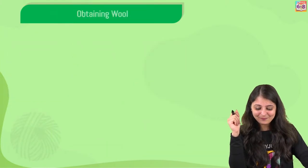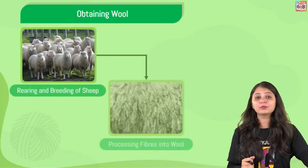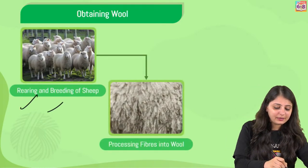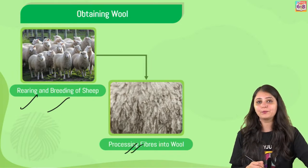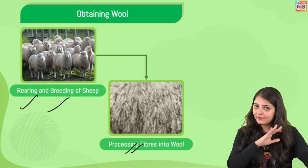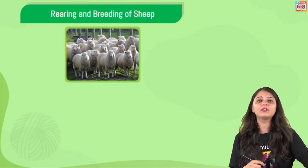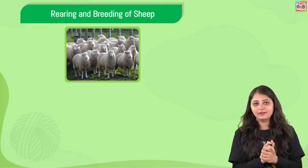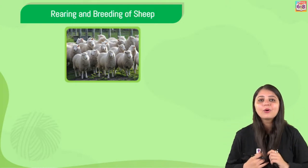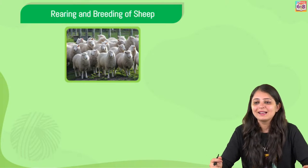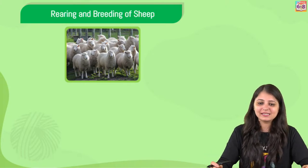Now, how are we actually obtaining these? There are some processes involved: rearing and breeding of sheep, and processing of fibers into wool. I want to ask you first - what do you think is the meaning of rearing? We've discussed this already. I want to see if you can recall what this term means. Tell me in the comment section.